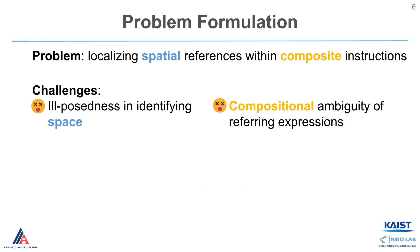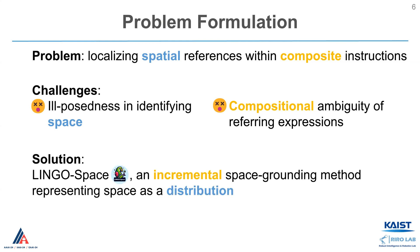To sum up, the problem we want to solve is localizing spatial references within composite instructions. This is challenging because of its ill-posedness in identifying space and compositional ambiguity of referring expressions. To address these challenges, we introduce LingoSpace, an incremental space grounding method representing space as a probabilistic distribution.